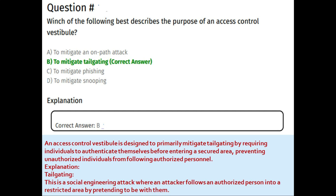Next question: which of the following best describes the purpose of an access control vestibule? Option A: to mitigate an on-path attack. Option B: to mitigate tailgating. Option C: to mitigate phishing. Option D: to mitigate snooping. The correct answer is option B: to mitigate tailgating.